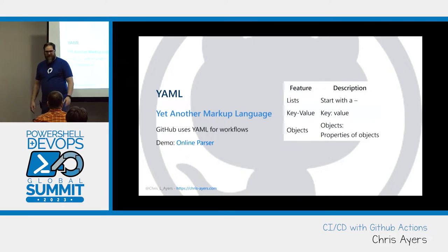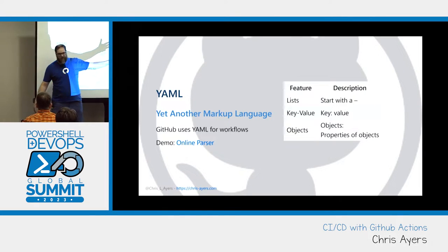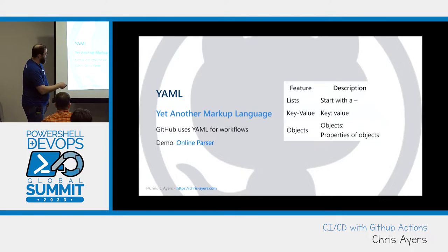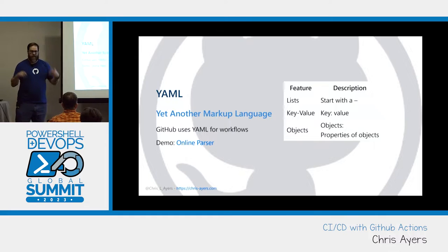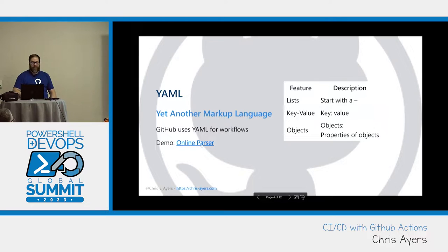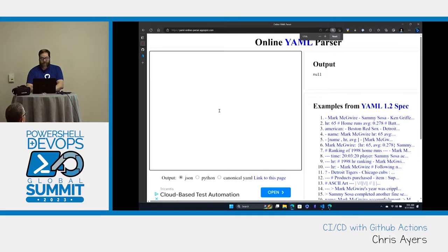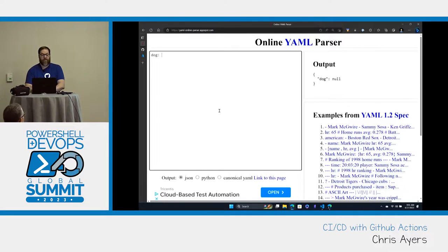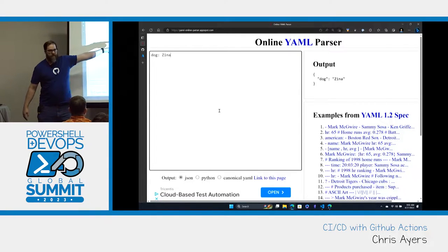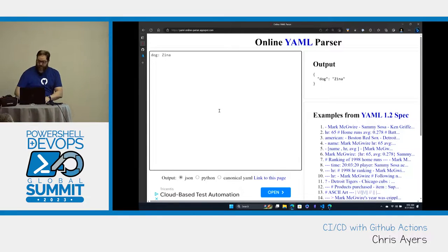Lists kind of start with a dash and a space. Objects are key value — key values are just the key, colon, the value. And then objects are like a key with a colon, and then properties. They can be key values, they can be lists. I have a link to an online parser. I have a dog named Xena. This is a key value, and it transpiles over to JSON. That's all it is — JSON under the hood.